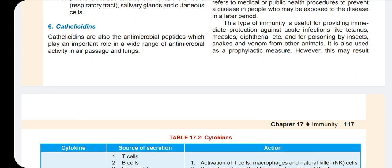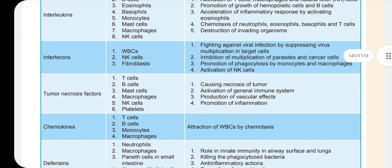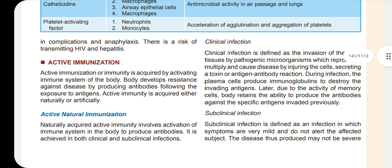This is a prophylactic measure — prophylactic measure means the urge to prevent or cure disease. Next is active immunization. In active natural immunization, immunity is what we get from our mother, for example from breast milk.